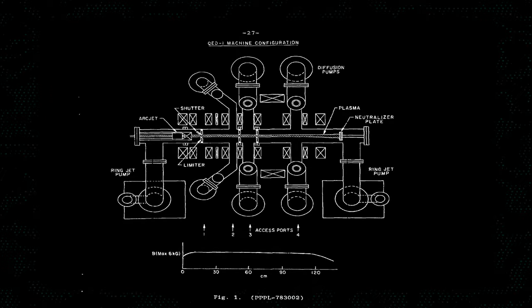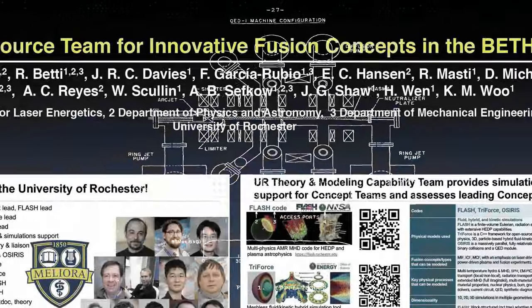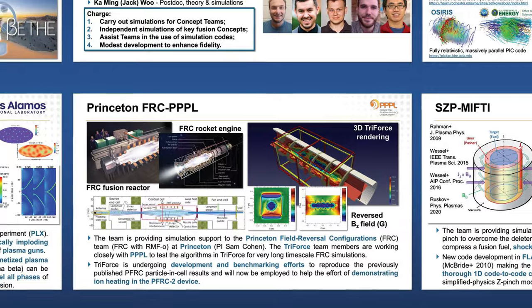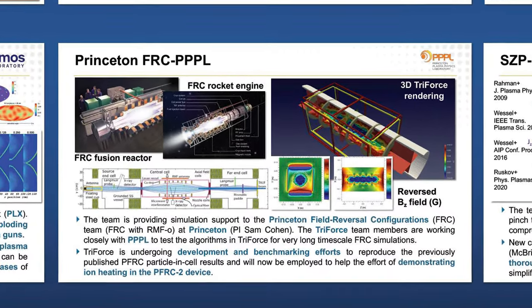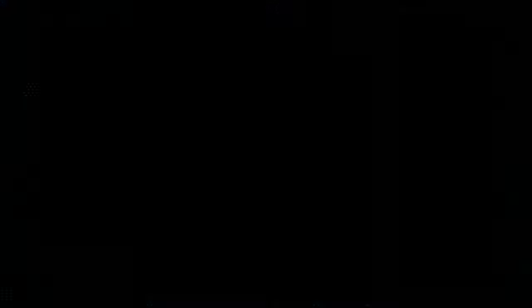The QED was succeeded by the more well-known Princeton Field Reversed Configuration System, or PFRC, variants of which have been experimented with from 2008 to today. The evolution of this device would serve to sustain the theories necessary for adapting such a fusion system for spacecraft propulsion.